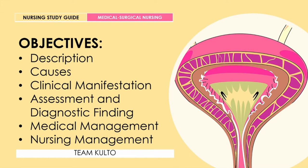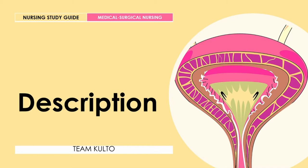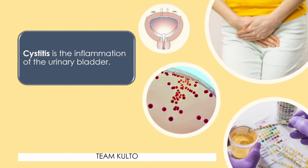What is cystitis? Urinary tract infections or UTIs are caused by pathogenic microorganisms in the urinary tract. Cystitis is the inflammation of the urinary bladder — the 'pantog' or bladder. Inflammation means there is infection.